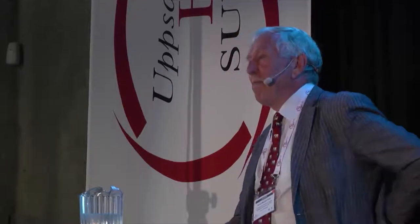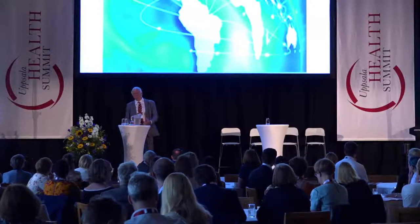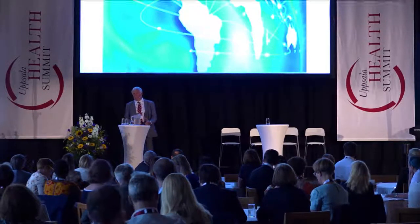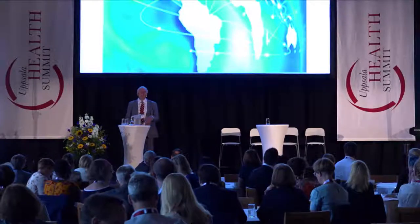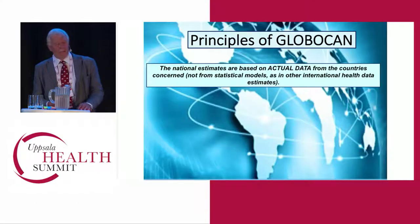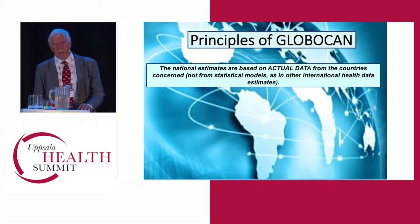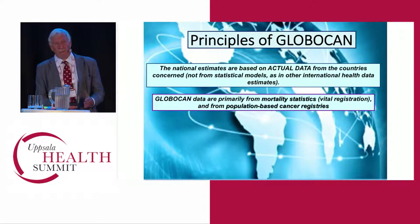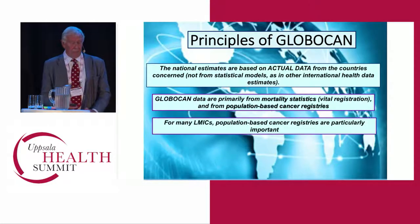Where does all this material come from? It seems very easy — we click on the internet and download a few pictures for our papers. But I think it's worth reflecting on where we're getting all this information. One essential point is that all those figures are based on actual data coming from different countries. They're not just estimates based on what level of development suggests — as we find in some other famous organizations that produce world estimates of different diseases. GLOBOCAN is based on real data collected by people around the world. The mortality data comes from vital registration, and the incidence data from population-based cancer registries.